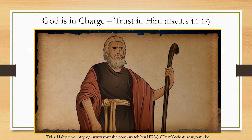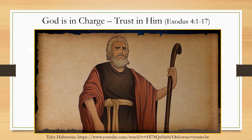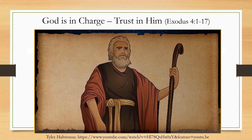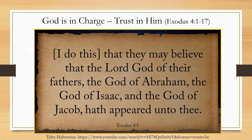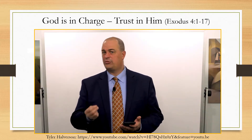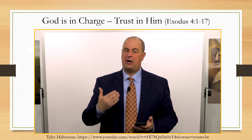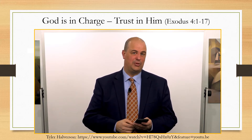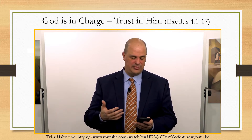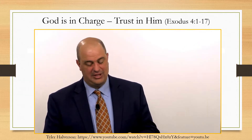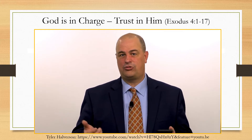Moses is still a little concerned — am I really supposed to be going forward with this mission and message to Pharaoh? God tells him in verse 5: 'I do this that they may believe that the Lord God of their fathers, the God of Abraham, the God of Isaac, and the God of Jacob hath appeared unto thee.' This is a reminder that we can trust God, and that is what God wants Moses to do — and by extension, all of us who follow the Lord through the teachings of Moses or any other prophet.